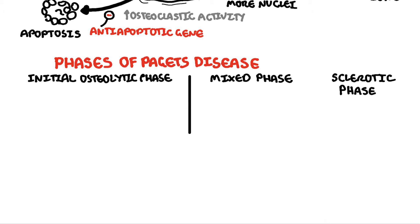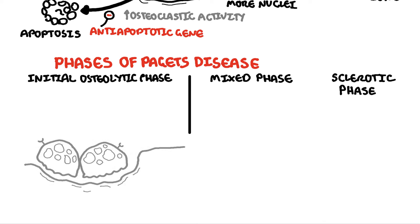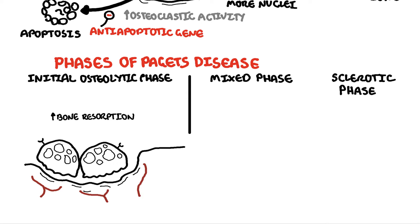In the initial osteolytic phase, there is a lot of bone resorption — bone breakdown by osteoclasts. This also causes an increase in blood flow to the area, called hypervascularization.